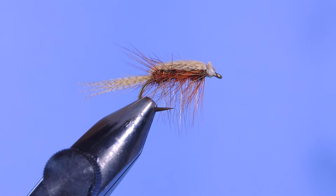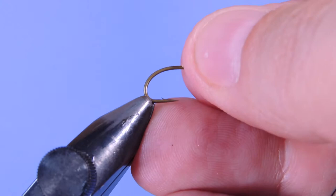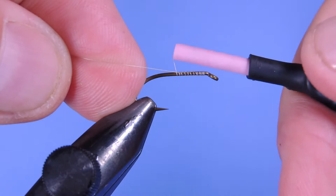All right, let's get a hook in the vise. Today I'm using a Mustad Signature R60 and this one is number 10. Get that in the jaws. I'm using a tan Benichi 11 odd thread.